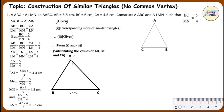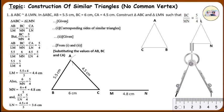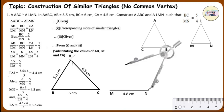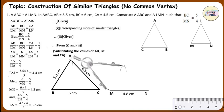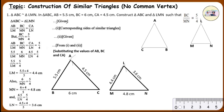Draw a rough figure of triangle LMN. Construct side MN of measurement 4.8 cm. On the compass, take measurement 4.4 cm from point N and construct an arc. Similarly, take a measurement of 3.6 cm, keep the pointer at M and construct an arc. Name the intersection point as L. Thus, the similar triangles can be constructed.